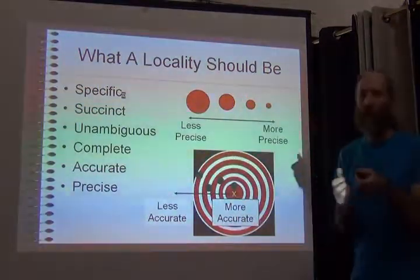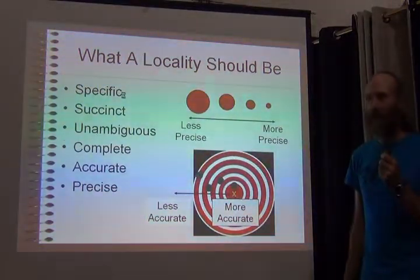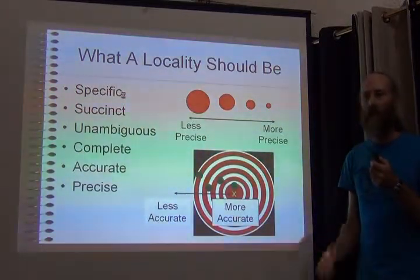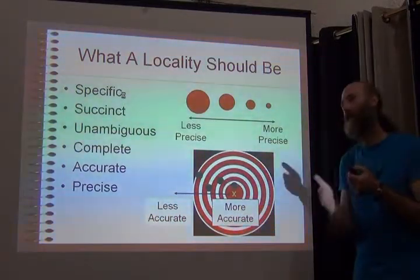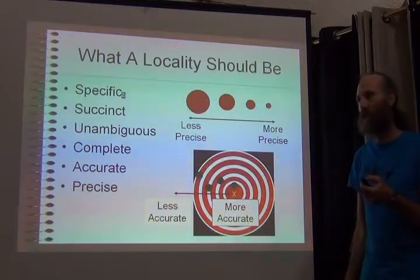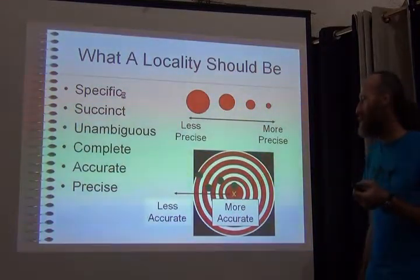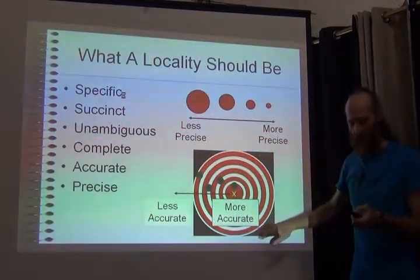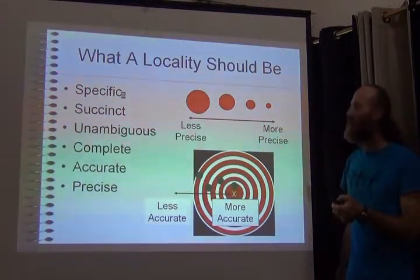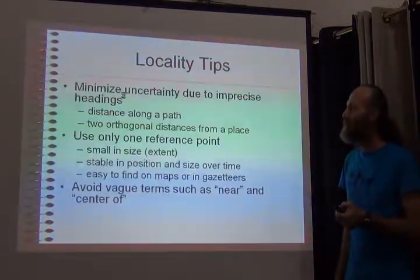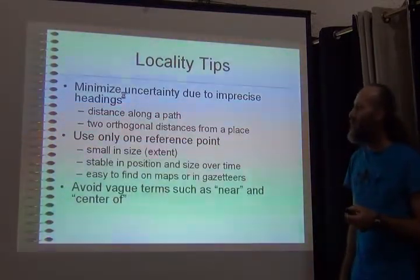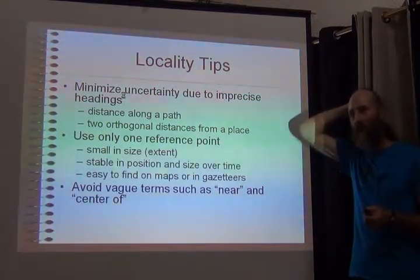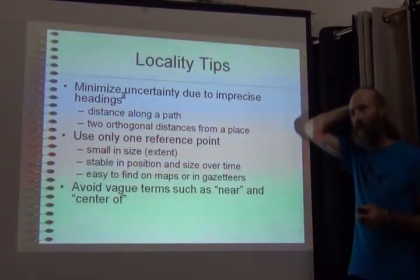Precise means that when the GPS is clicked and you write it into the final destination — the database — all of the precision of the GPS is preserved. We already talked about accurate versus precise, so we don't need to do that again. So what are the constituents of a good locality description?